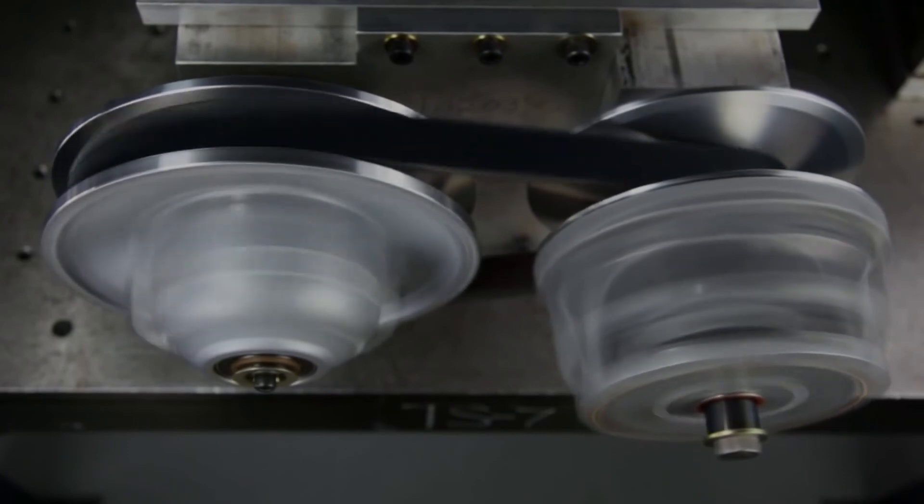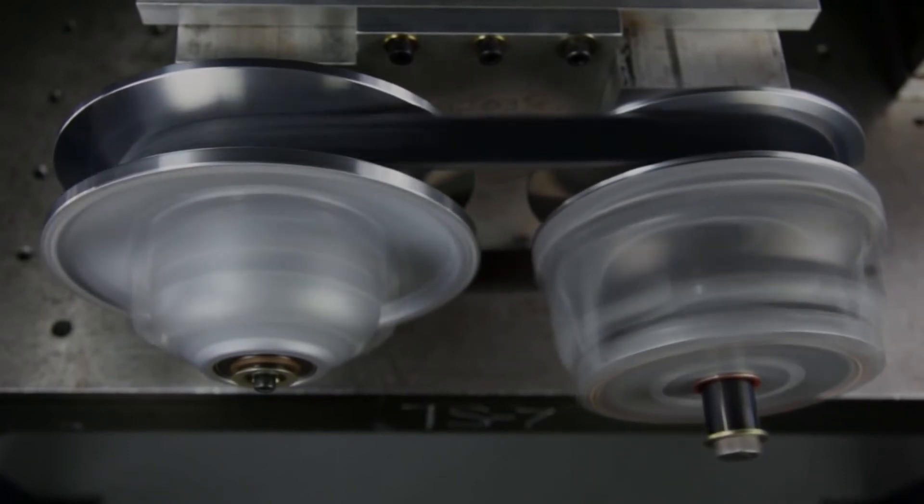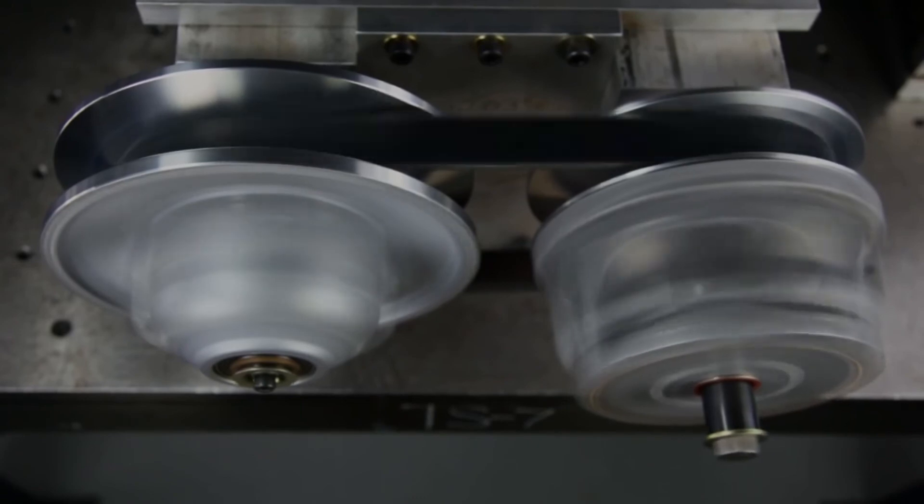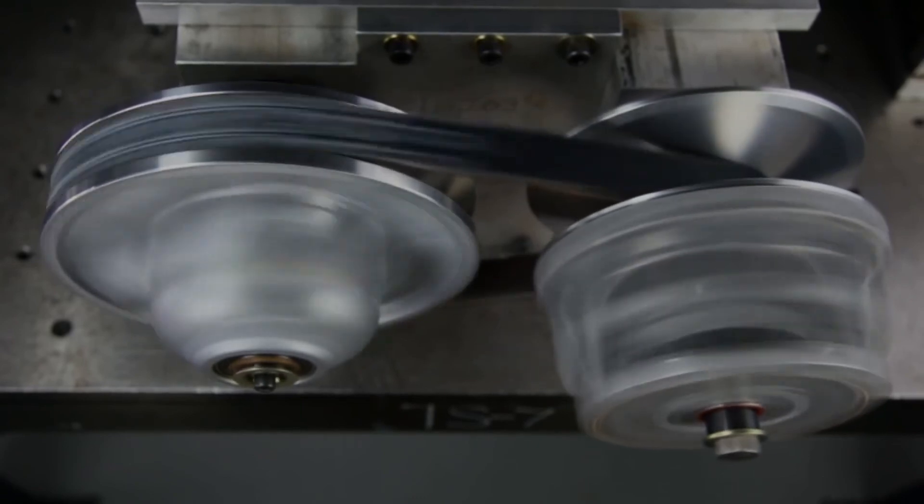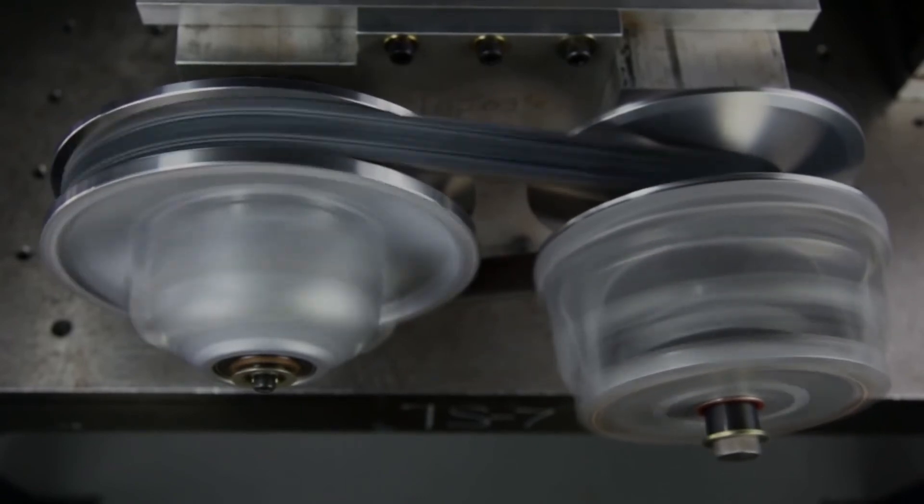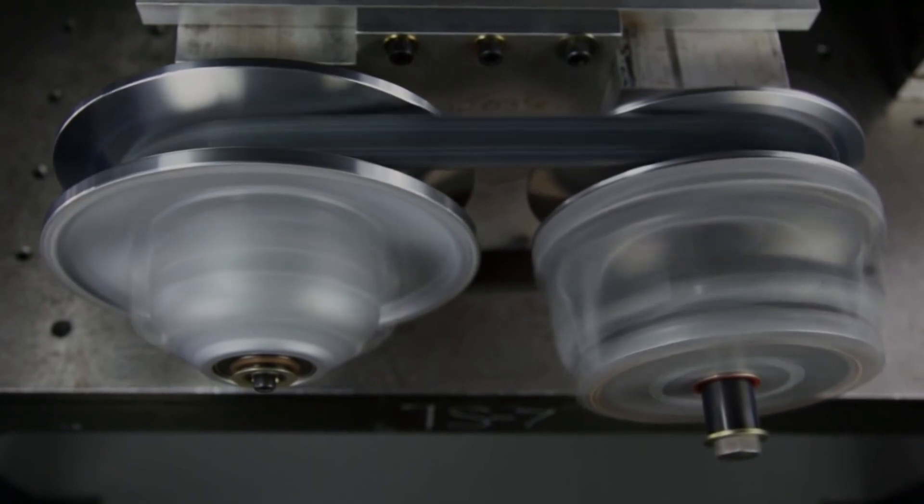CVTs can be tuned to differing applications by the right choice of flyweight mass, spring strength, and helix angle. When properly designed and tuned, all of the components of a CVT system work together to transmit engine power to the ground at the optimal ratio.